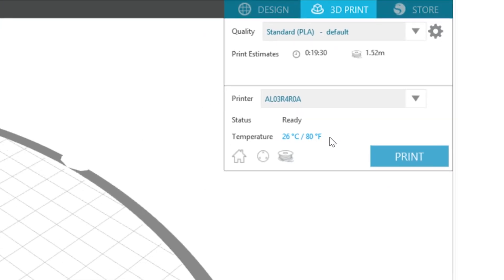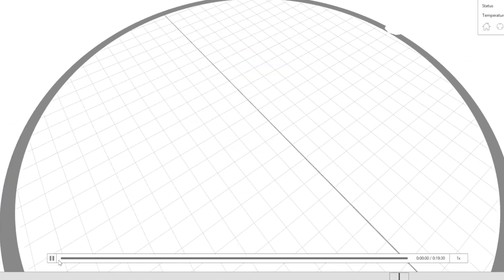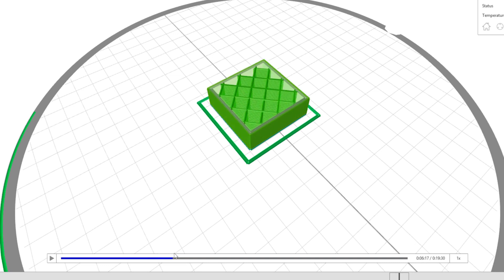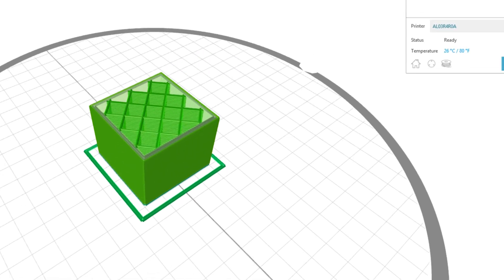Below the rendered object in the software, there is a player bar that you can use to see how the Alta will print the object layer by layer. When you've finished adjusting your print settings, select Print.